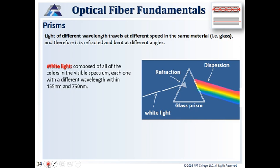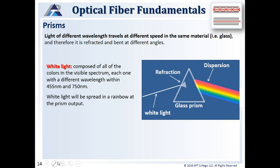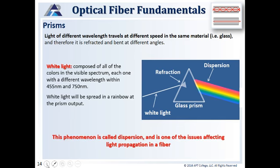Light of different wavelengths travels at different speeds in the same material, such as glass. If you've seen a rainbow, light is traveling at different speeds based on its wavelength. White light is composed of all the colors in the visible spectrum, each color having a different wavelength between 455 nanometers and 750 nanometers. White light spreads in a rainbow at a prism output — you'll always see it in the same order: ROY-GBIV — red, orange, yellow, green, blue, indigo, violet. Rainbows don't appear in the other direction because of the speeds at which these wavelengths travel. This phenomenon is called dispersion — one of the issues affecting light propagation in a fiber.